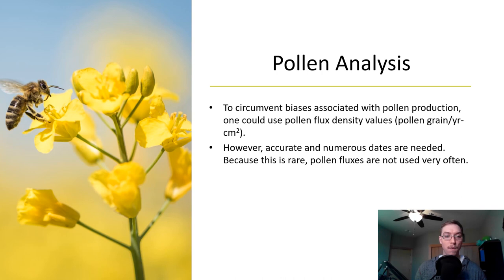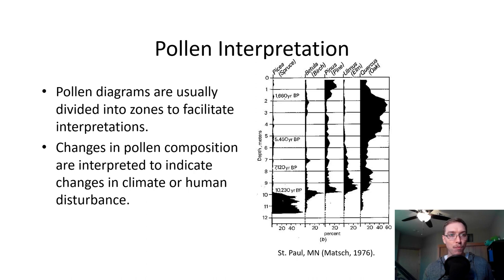Looking at pollen interpretation, pollen diagrams are usually divided into zones to facilitate interpretation. Changes in pollen compositions are interpreted to indicate changes in climate or in human disturbance. This is a pollen graph by Matz 1976 out of St. Paul Minnesota, looking at depth on the vertical axis in meters, zero to ten meters down, dated from ten thousand two hundred and thirty years before the present all the way to the present. What we see here is in the way past when temperatures were much colder, pine or spruce trees predominated. As we move towards the warmer mid-Holocene we're getting to more of our oak savannah starting to invade the area.